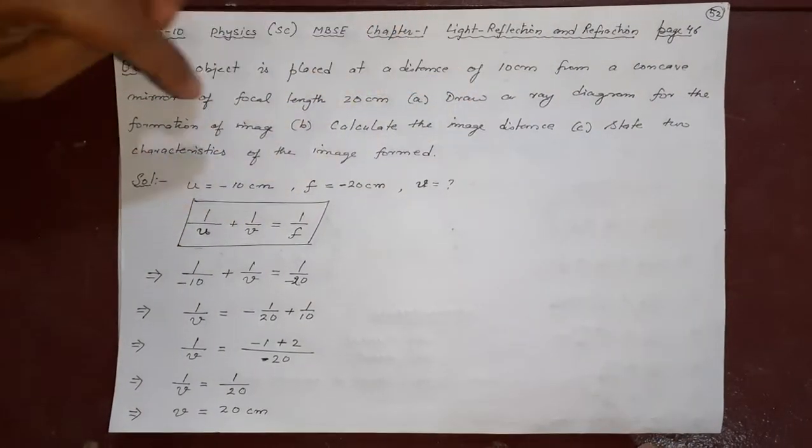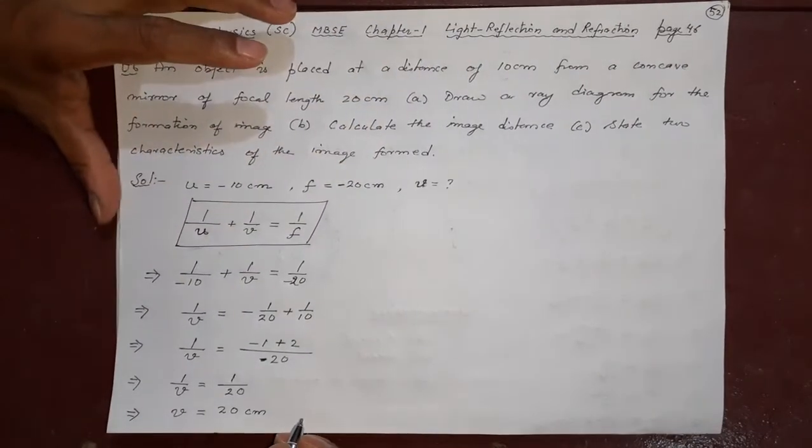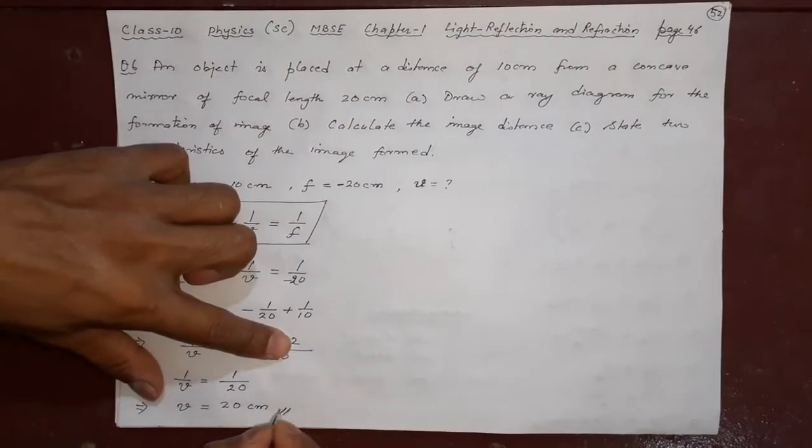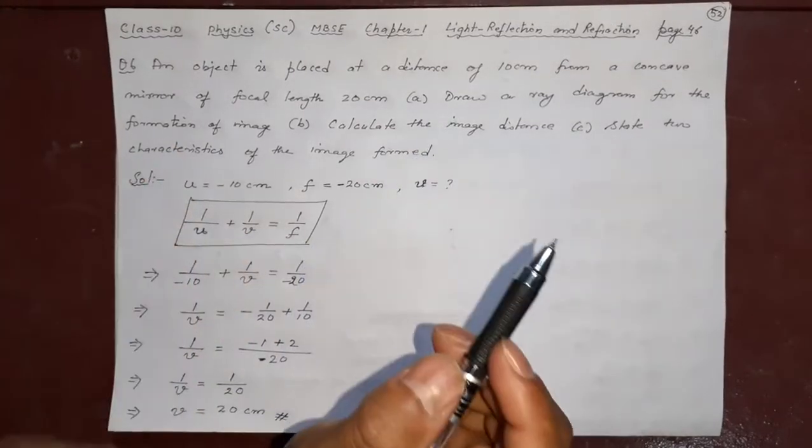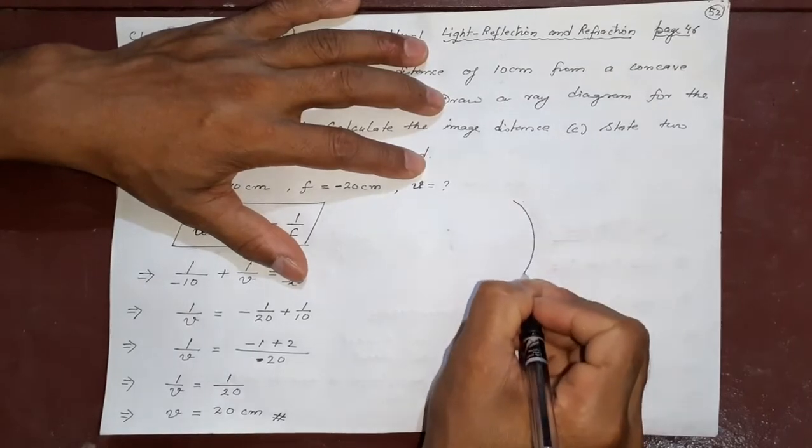we can easily make the diagram where the object is on the right side. What type of mirror is this? Concave mirror. And let us, this is the second part is answered. This is B is already answered. Now, I am going to answer the A, draw the ray diagram. What is that? It is a concave mirror.